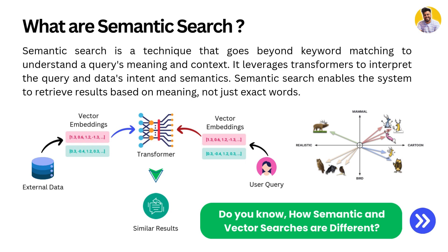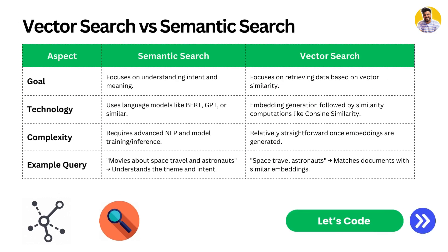Let me show the complete difference between semantic search and vector search. Semantic search focuses on understanding intent and meaning, while vector search is totally based on vector similarity — word-to-word similarity. For technology, semantic search uses large language models or embedding models, but vector search uses simple similarity measures only, like cosine similarity, Euclidean distance, or L2 distance. Semantic search requires advanced NLP and trained models, but vector search can work in a much simpler way.